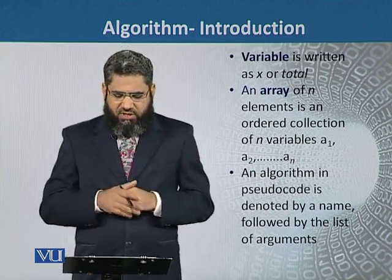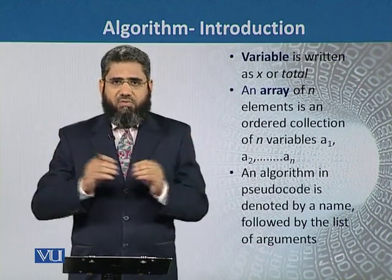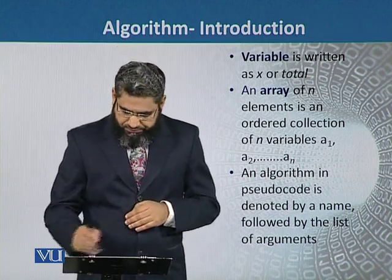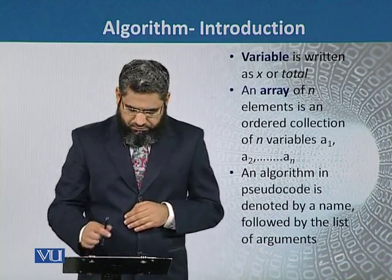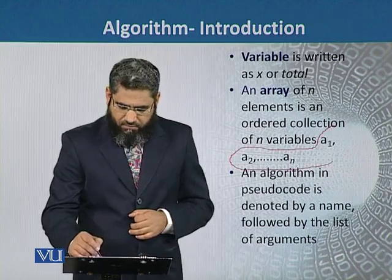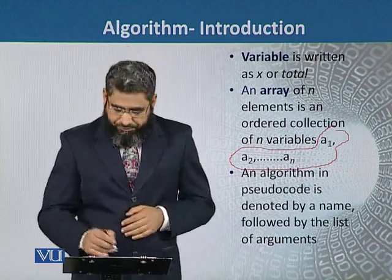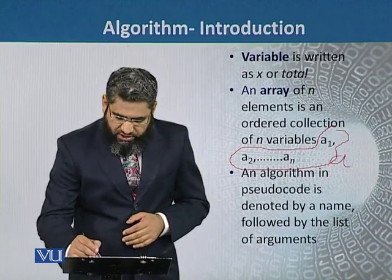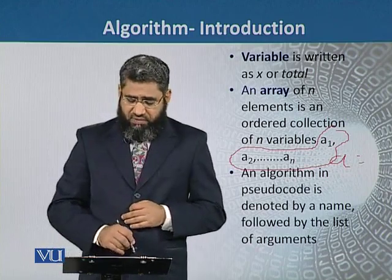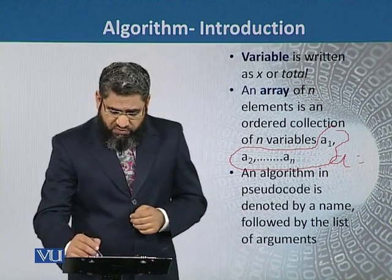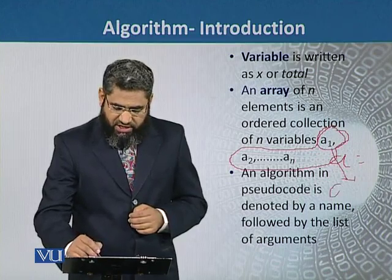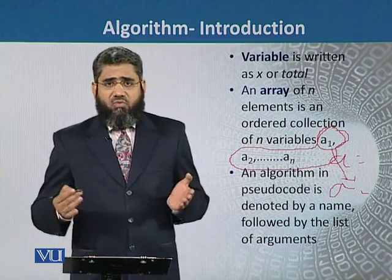An array is an N-element collection of some specific numbers. Array elements are represented as a1, a2, up to an, and generally we write it as a = [a1, a2, ..., an]. If we want to access a specific element — for example, a1 — out of this array, then we represent it as a[i], where i is any number from 1 to n.